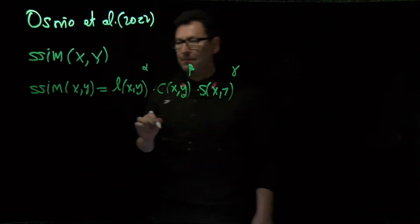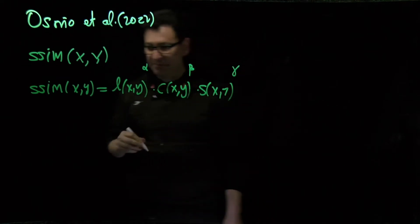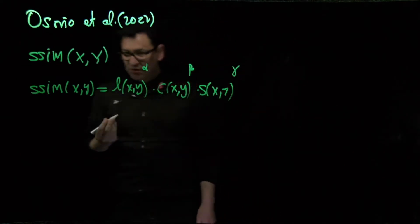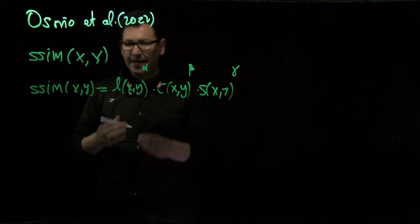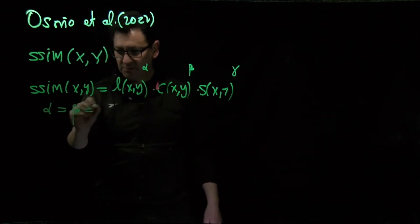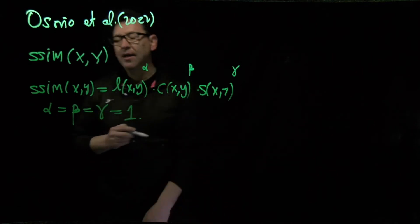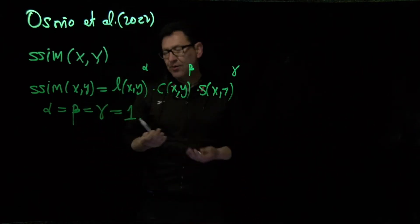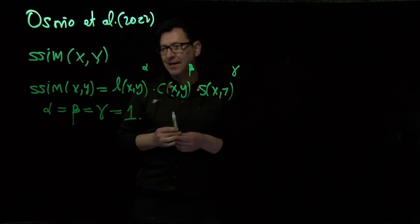Alpha, beta, and gamma are parameters. Traditionally, this coefficient has been used assuming that alpha equals beta equals gamma equals one. For 20 years, engineers have been using this coefficient with these assumptions.